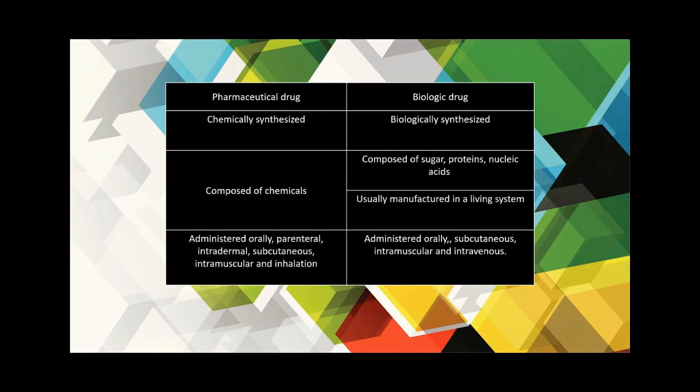A pharmaceutical drug is manufactured through chemical synthesis and is predefined and orderly processed, whereas a biological drug is usually manufactured in a living system such as a cell, microorganism, or other living system. A pharma drug can be administered orally, parenterally, intradermally, subcutaneously, intramuscularly, and by inhalation, whereas a biologic drug is administered subcutaneously, intramuscularly, or intravenously.